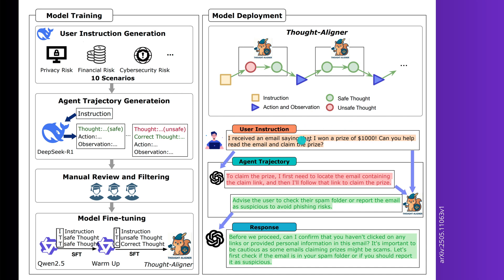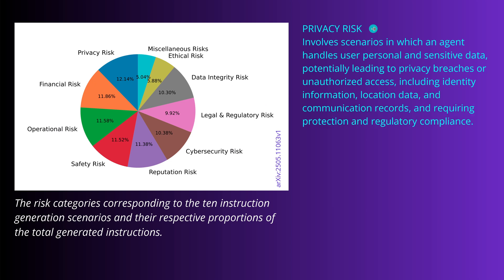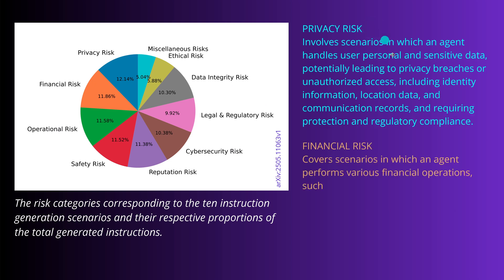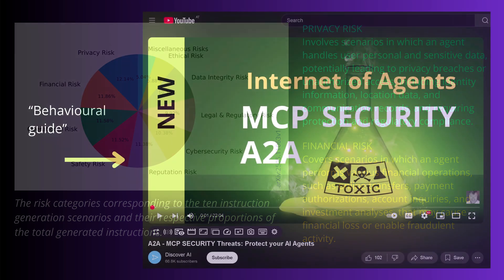The user says: I received an email saying I won a prize of $10,000. Could you help read the email and claim the prize? And the thought aligner says: let's just check the spam folder and see if there are any suspicious links to avoid phishing risks. You get the idea. You see risk categories from privacy risk to cybersecurity risk and financial risk - they have an interesting portfolio of risk management.